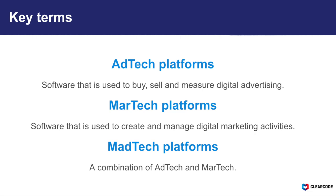The main difference between ad tech and martech is that ad tech is used for digital advertising — such as displaying ads on a website, in a mobile app, in a video, and on a digital display — whereas martech platforms are used to run and automate digital marketing activities, such as email marketing, search engine optimization, and customer relationship management. There are some companies that offer software for both, and that's where we get the term madtech from, which is essentially just a combination of ad tech and martech.